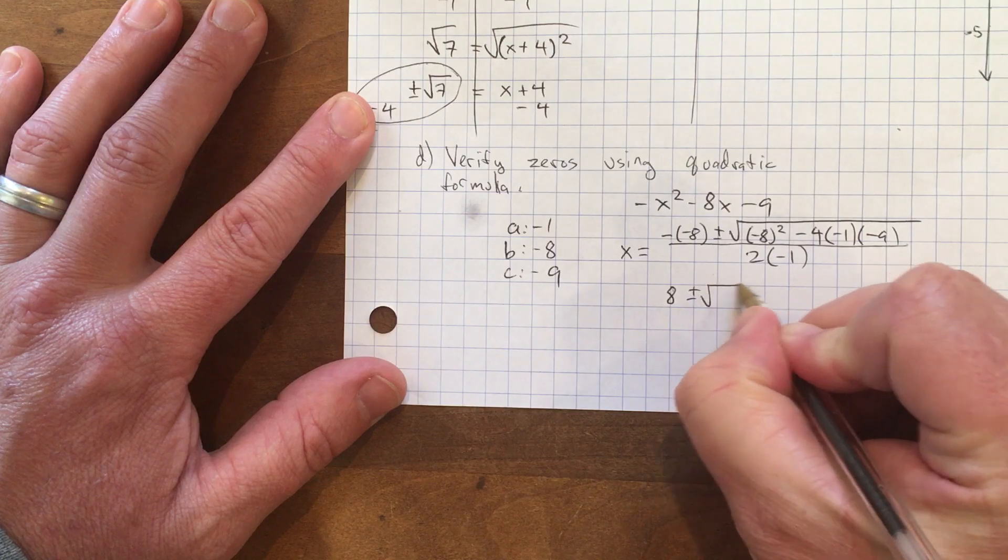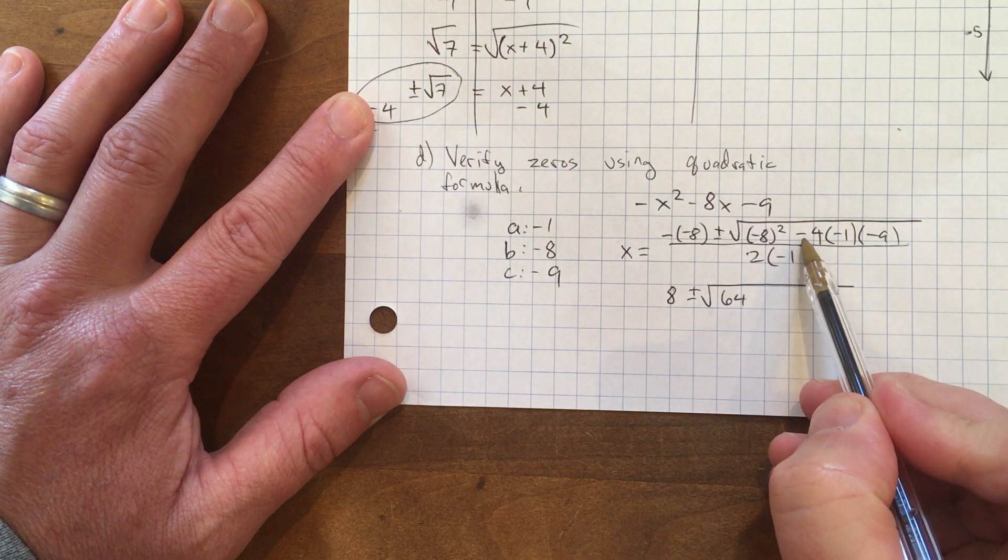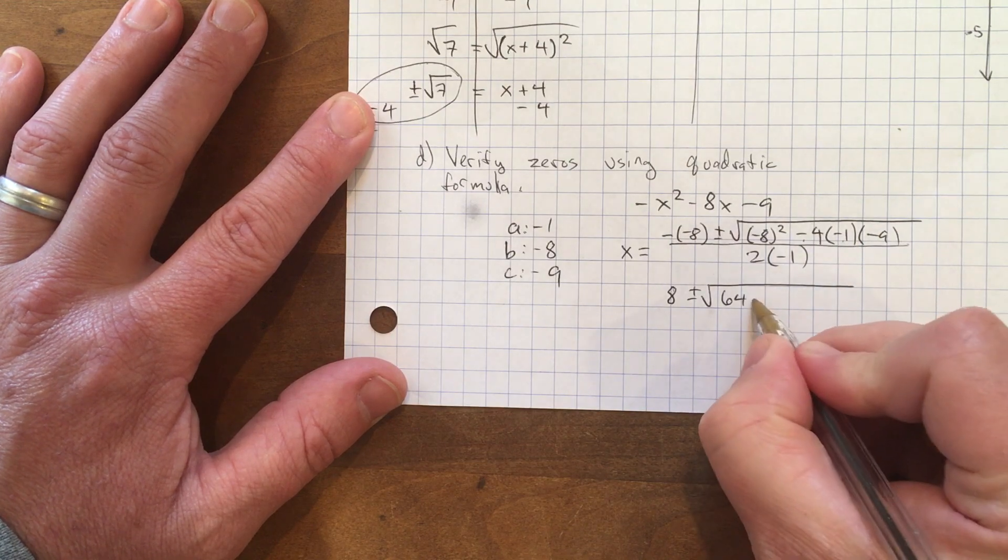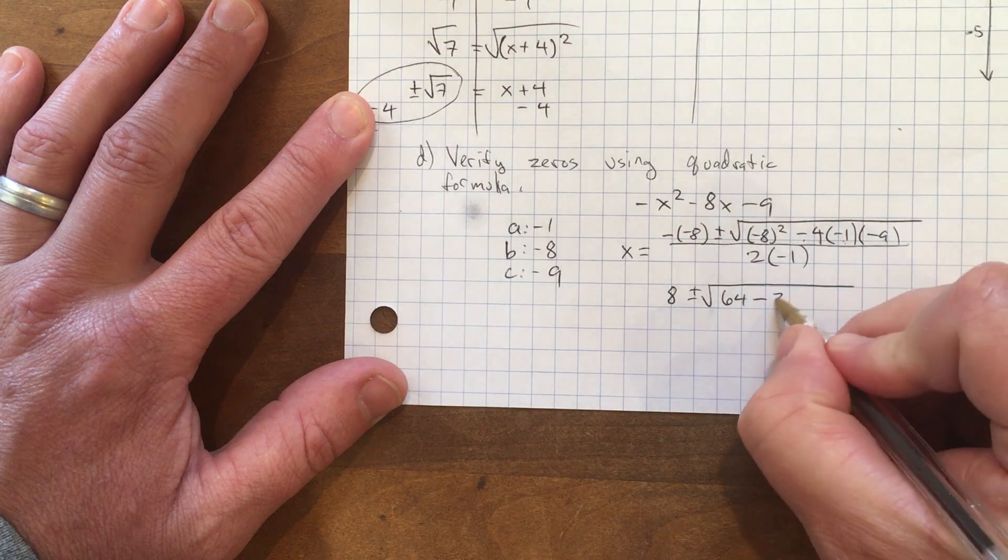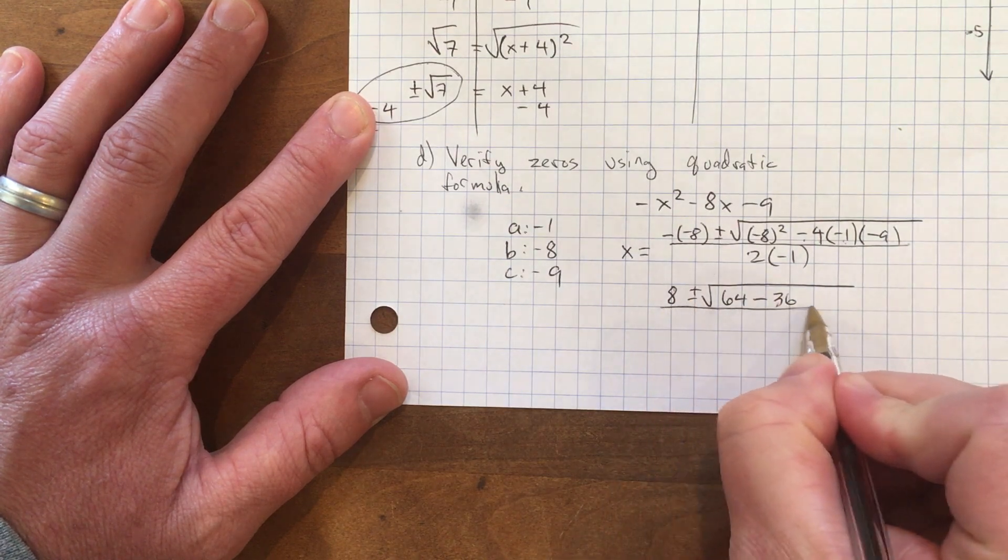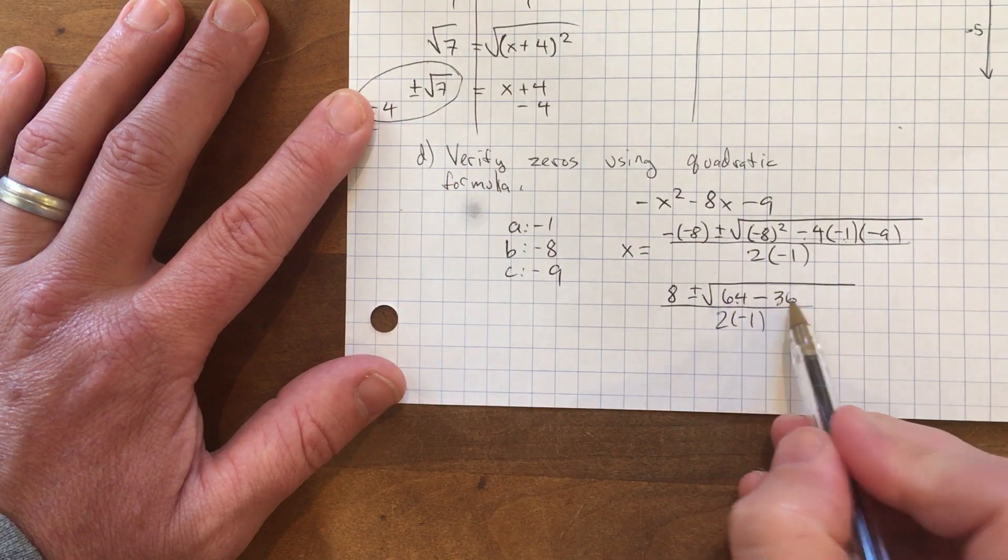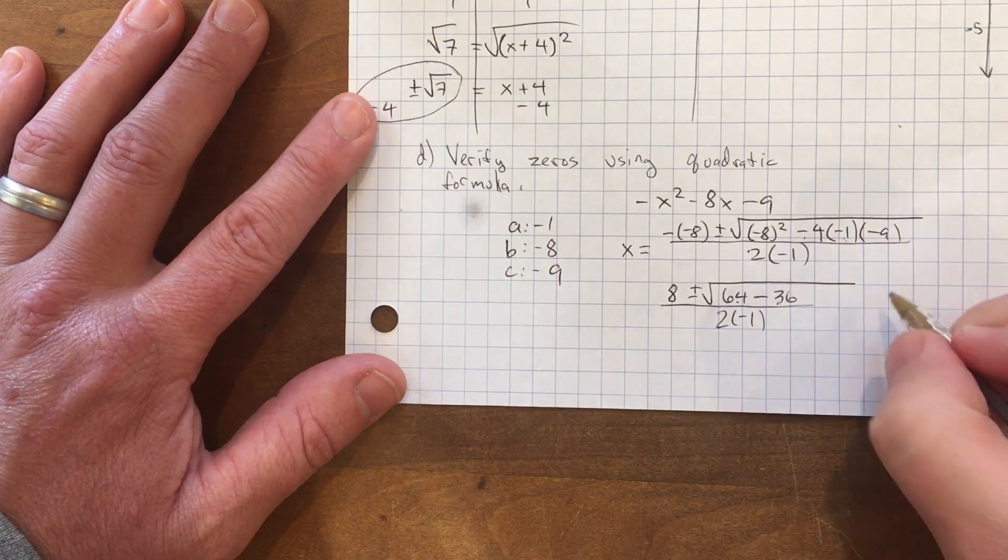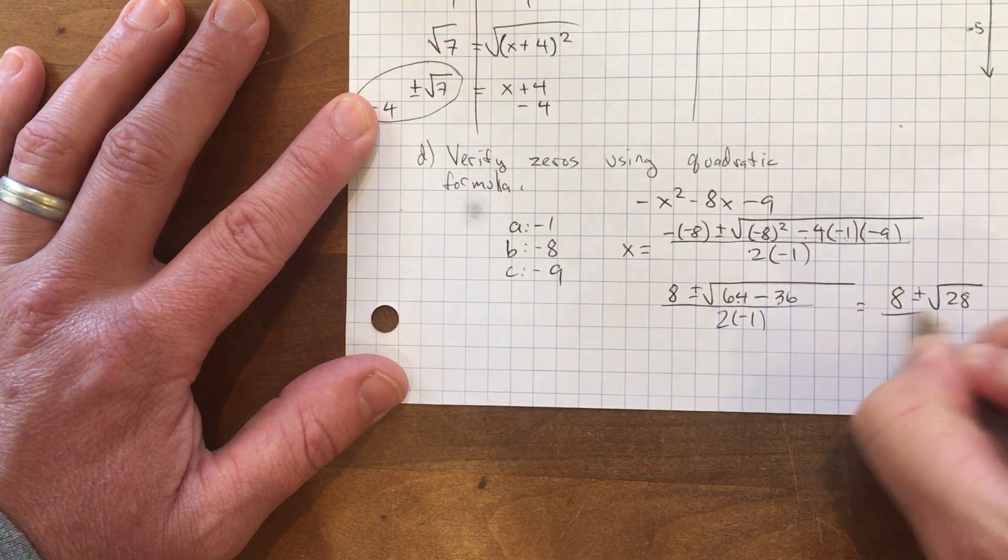-(-8) is positive 8, and 8² is 64. Now this is a negative times a negative times a negative, which is negative, and 4 × 1 × 9 = 36. Then I divide by 2 × -1. 64 - 36 = 28, so I get (8 ± √28) / -2.